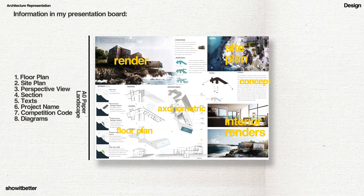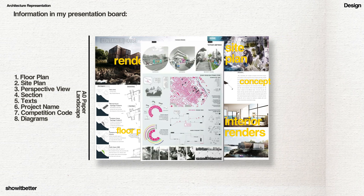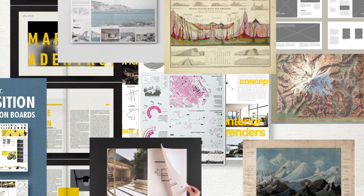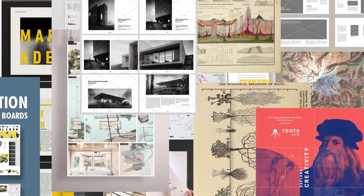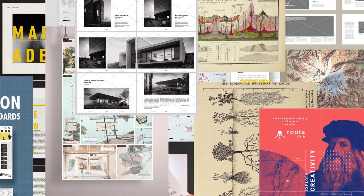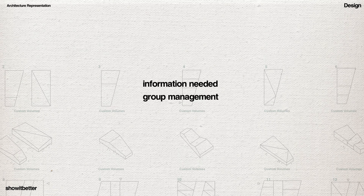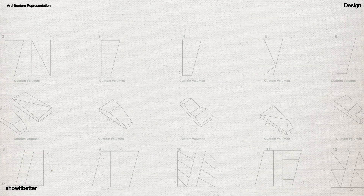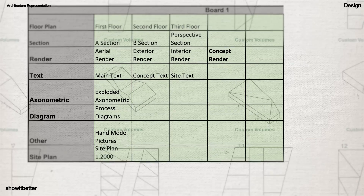If you don't have prior information about what you need on your presentation board, look at references and ask yourself: what does my board need in order to communicate all the ideas? Do I need only three images or ten? Do I need one section or three? After you have clarity on who holds the main file and what information you need, list out all the tasks — along with who is going to do each one and when — so it may look something like this.